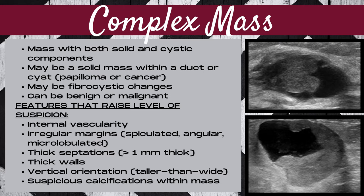Features that raise the level of suspicion of a complex mass include internal vascularity, irregular margins such as spiculated, angular, or microlobulated margins, thick septations greater than one millimeter in thickness, thick walls of the cyst, and a vertical orientation — meaning a taller-than-wide orientation on the ultrasound image.